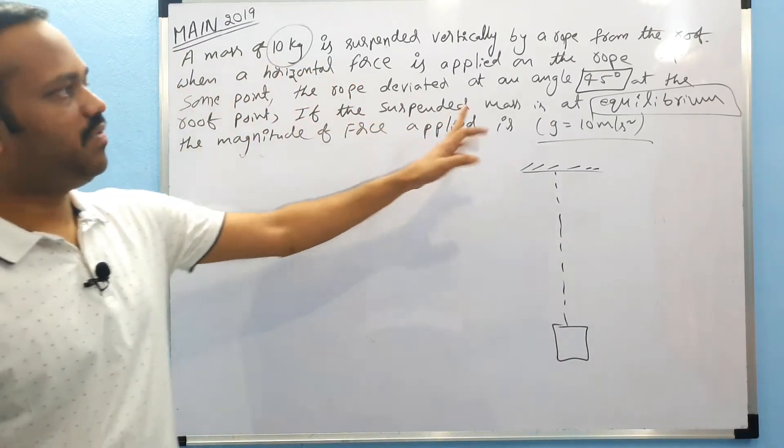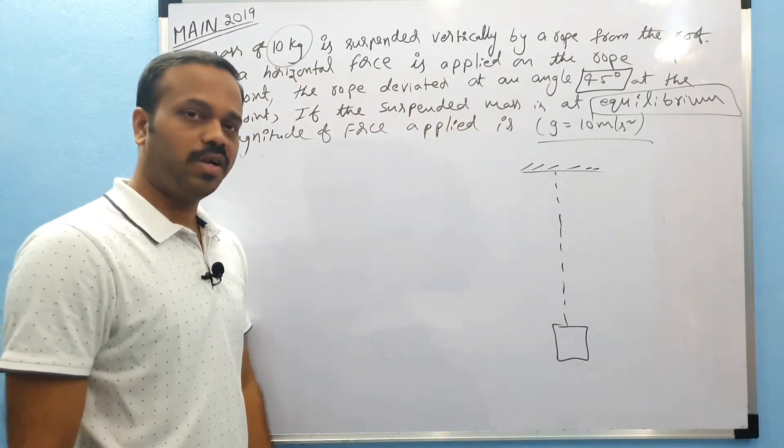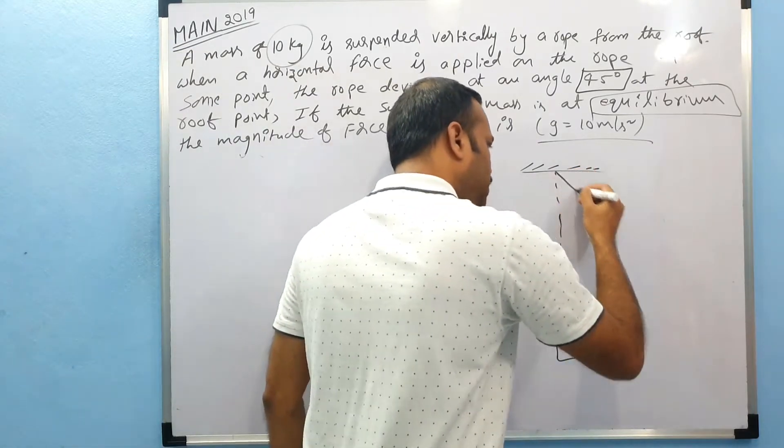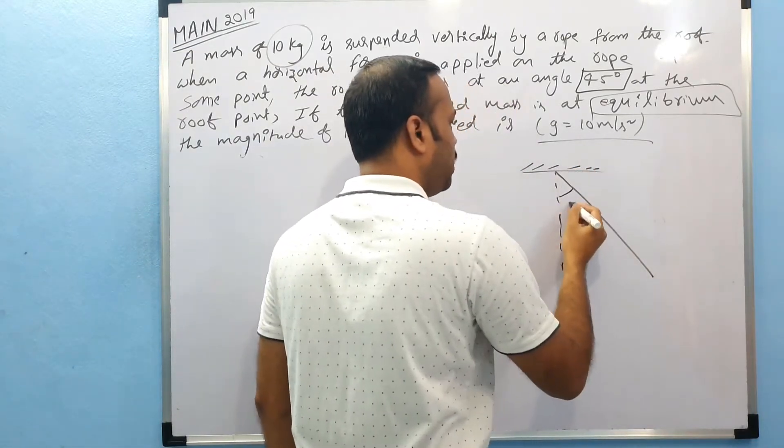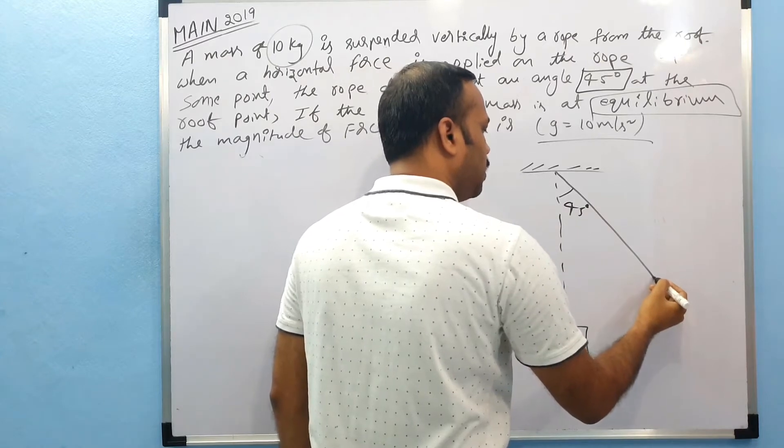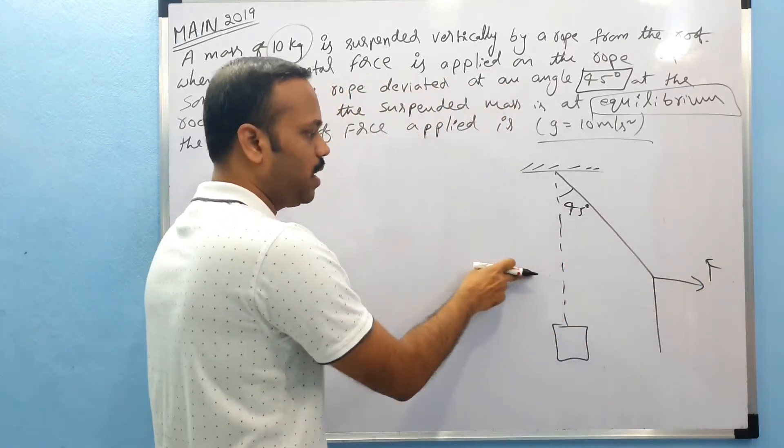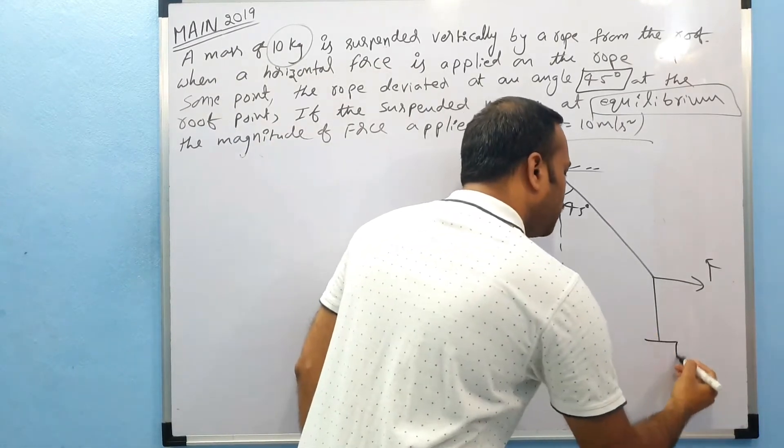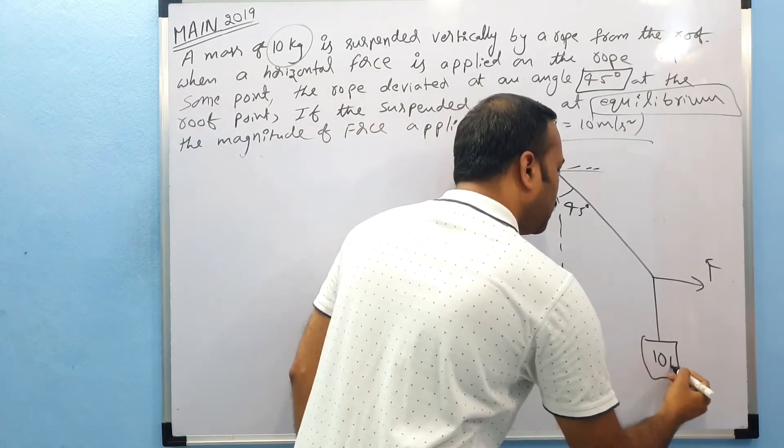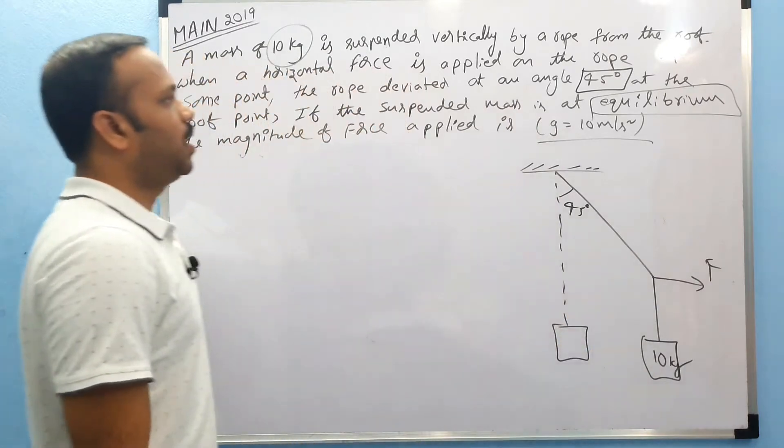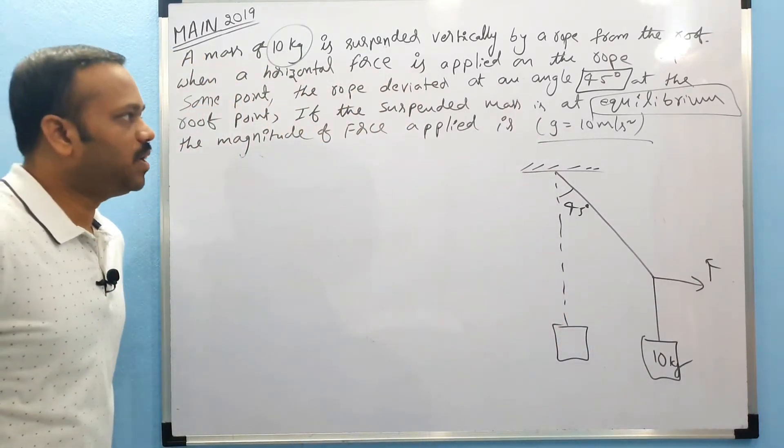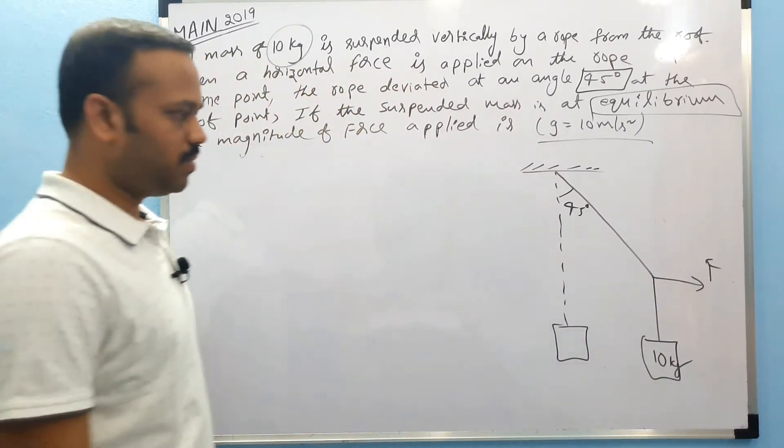The rope deviated by 45 degrees, so it looks like this. We applied force here and the mass will be here - this is 10 kg. Now if the suspended mass is at equilibrium, that means it is not moving.